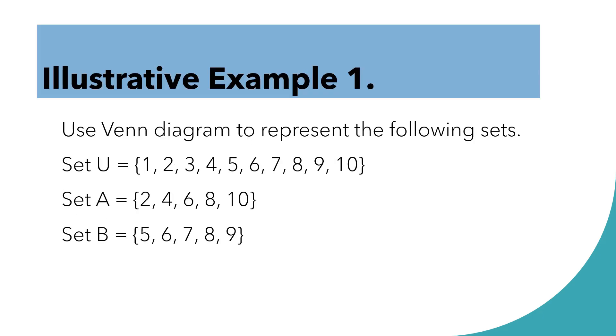So, let us have the illustrative example number 1. Use Venn Diagram to represent the following sets. Set U consists of 1, 2, 3, 4, 5, 6, 7, 8, 9, and 10. Set A consists of 2, 4, 6, 8, and 10. While set B consists of 5, 6, 7, 8, and 9.